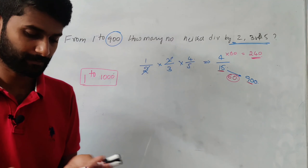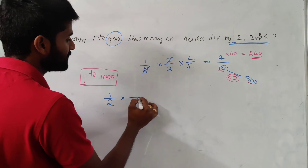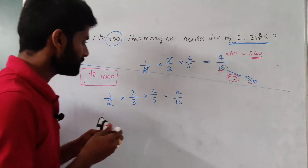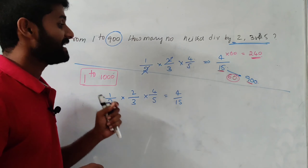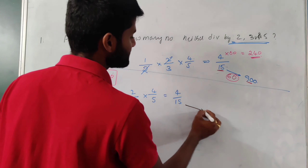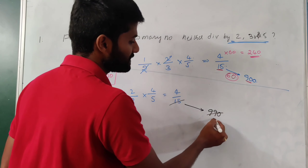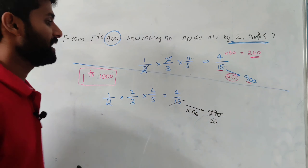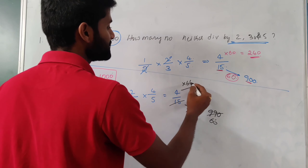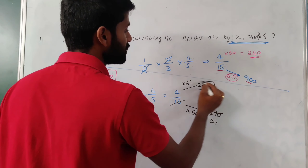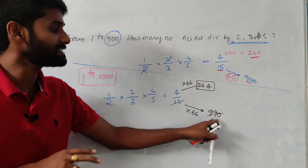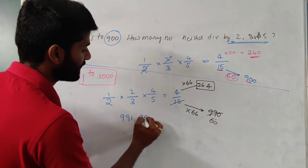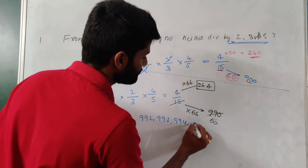From 1 to 12, how many numbers are not divisible by 2 or 3? Fraction for not divisible by 2 is 1/2; for not divisible by 3 is 2/3. Multiply: (1/2) times (2/3) equals 1/3. So from 1 to 12: 12 times (1/3) equals 4. Indeed, checking: numbers 1, 5, 7, 11 are not divisible by 2 or 3 — exactly 4 numbers.